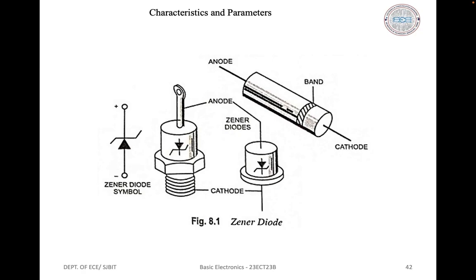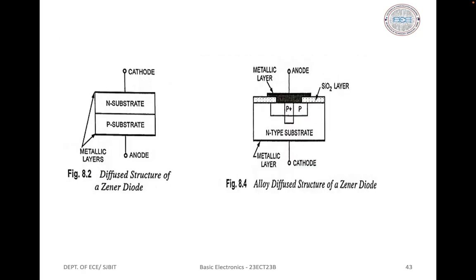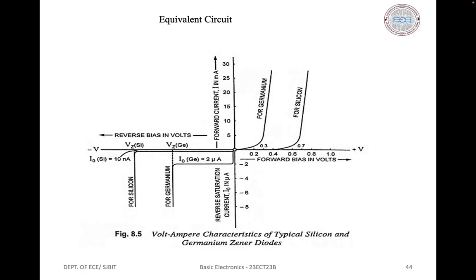The typical characteristics of a zener diode are shown here. Its forward characteristics are simply that of an ordinary forward-biased diode. Some important points on the reverse characteristics are: the zener breakdown voltage denoted as VZ; IZD, the test current for measuring VZ; IZK, the reverse current near the knee of the characteristic, which is the minimum reverse current to sustain breakdown; and IZM, the maximum zener current, limited by the maximum power dissipation.